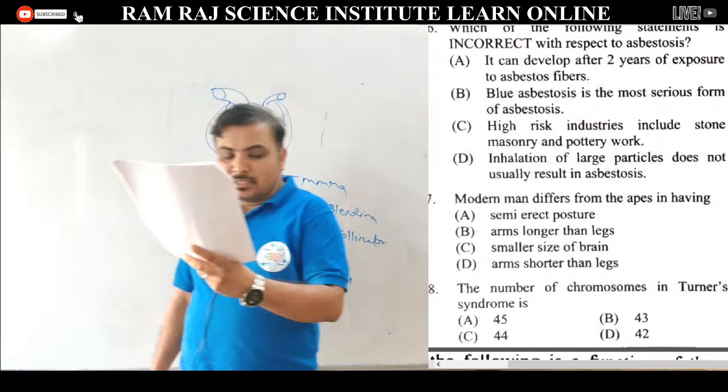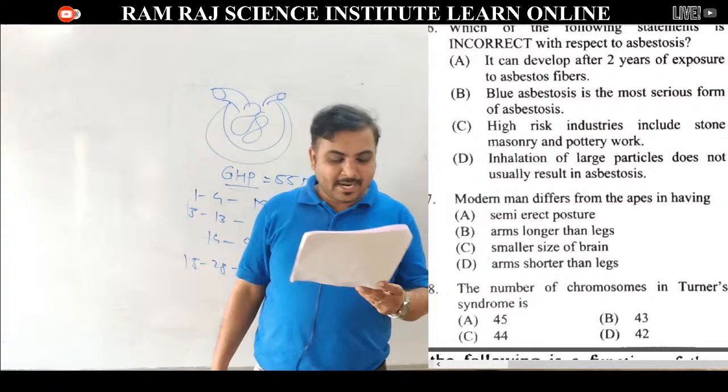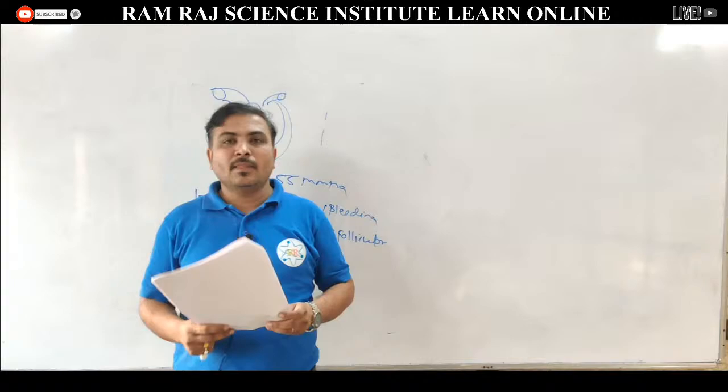Question 88: number of chromosomes in Turner syndrome. Down syndrome में 47 chromosomes होते हैं. Turner syndrome और Klinefelter syndrome दोनों में 45 chromosomes होते हैं. तो answer is 45 chromosomes.